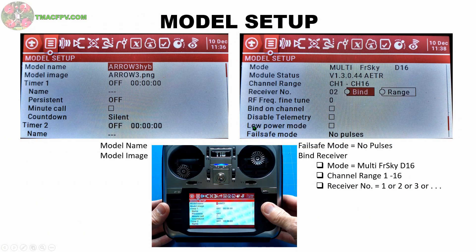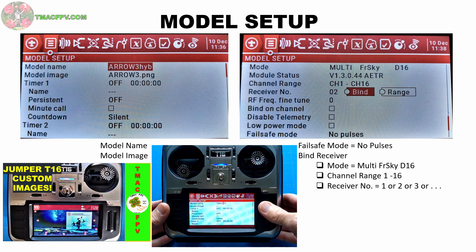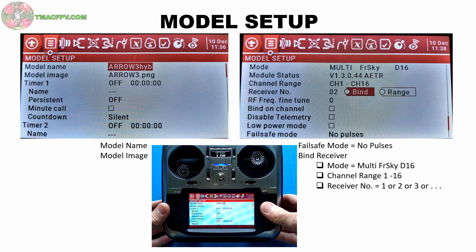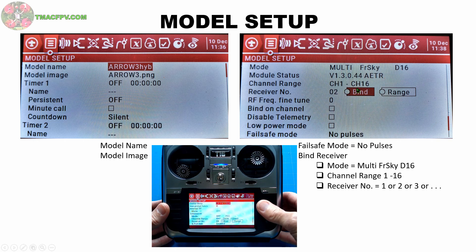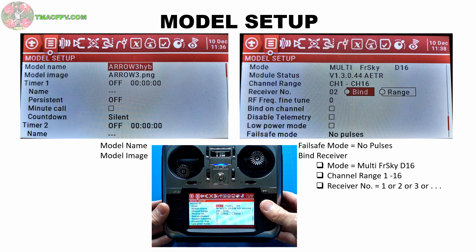First we'll look at the Model Setup menu. Here there's really only four things we need to do: input a model name, use a model image if desired, and then scroll to the Internal RF or External RF section. Here's where we set our fail-safe mode to no pulses, select our mode — if using the Jumper R1 or FrSky RxSR, select FrSky D16 — choose your channel range normally 1 through 16, and set your receiver number. Then click bind and hold the bind button on your receiver while plugging in the battery.